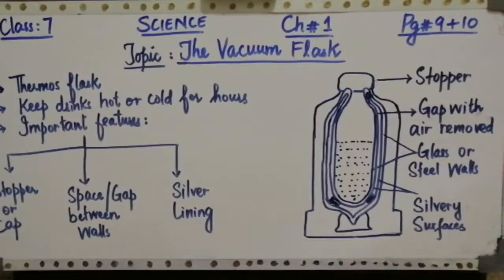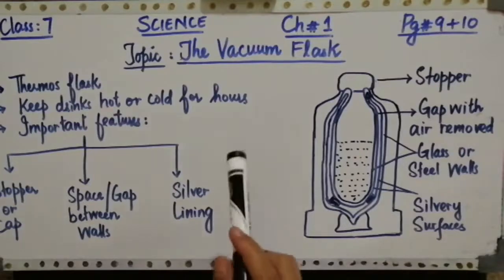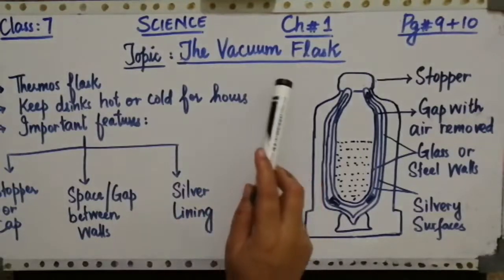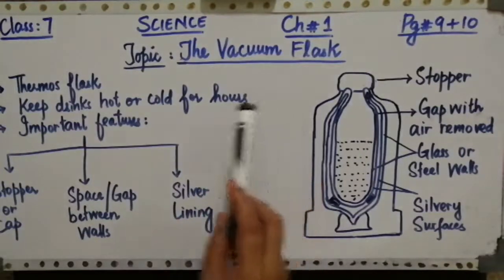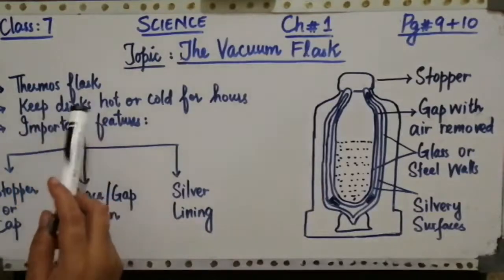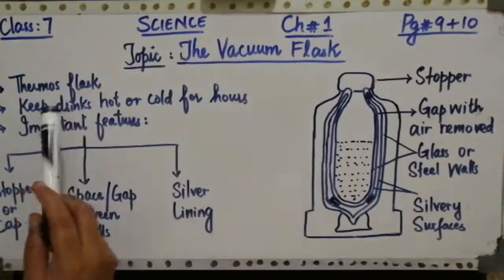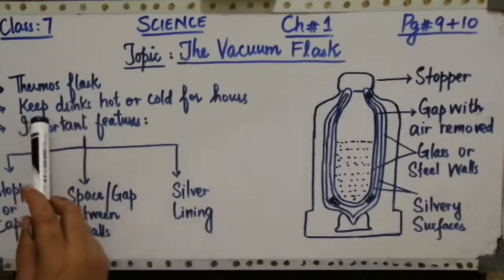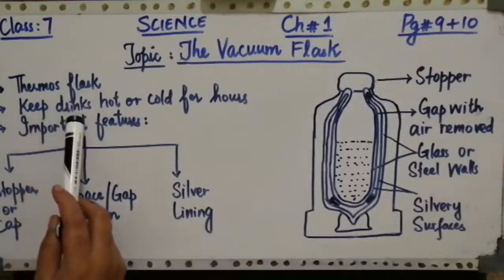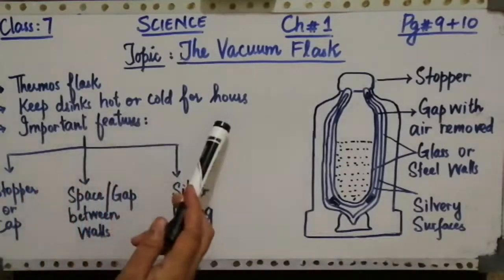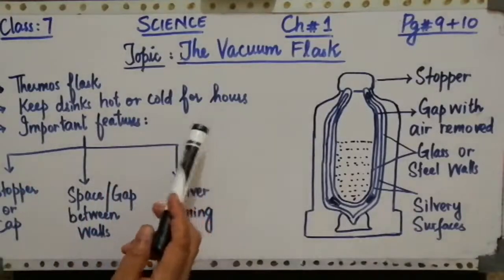The vacuum flask is also known as the thermos flask. The most important application of all the ways of heat transferring has been seen in the vacuum flask. What is the purpose of the thermos flask or vacuum flask? It can keep drinks hot or cold for several hours.